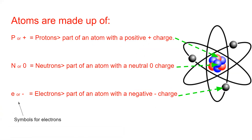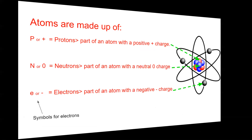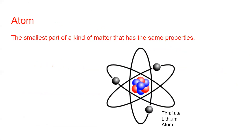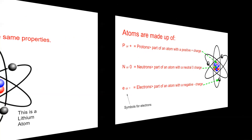This would actually be lithium — I can tell because it has three protons. Atoms are the smallest part of a kind of matter that has the same properties. Now, atoms are made of still smaller parts — this is contrary to what we're often told, that atoms are the smallest part of matter.